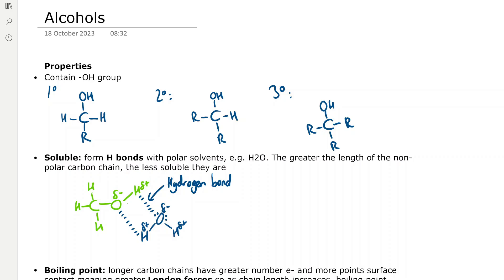The properties of alcohols: alcohols contain a hydroxyl group, which is an OH group. You can have primary alcohols, which have one alkyl group attached to the carbon atom. You can have secondary alcohols, which have two alkyl groups attached to the carbon atom, and you can have tertiary alcohols, which have three alkyl groups attached to the carbon atom that has the hydroxyl group attached.